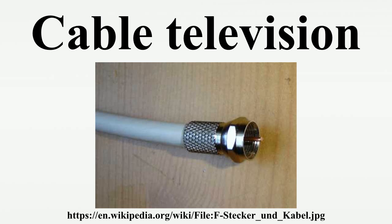Later, cable operators began to carry FM radio stations and encouraged subscribers to connect their FM stereo sets to cable. Before multi-channel television sound became common, pay TV channel sound was added to the FM cable lineups. Operators expanded beyond the 12-channel dial to use the mid-band and superband VHF channels adjacent to the high band 7 to 13 of North American television frequencies. Some operators, as in Cornwall, Ontario, used a dual distribution network with channels 2 to 13 on each of the two cables.